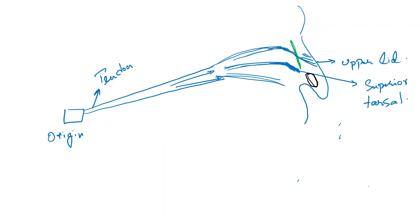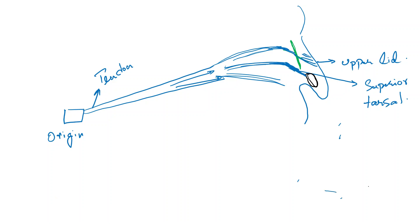This is about the insertion of the intermediate lamella of the levator palpebrae superioris. Moving on to the inferior lamella: the fibers of the inferior lamella end by getting inserted onto the superior fornix — the upper fornix of the conjunctiva.